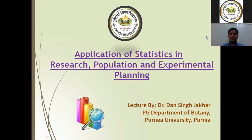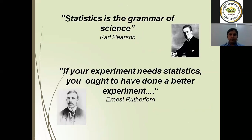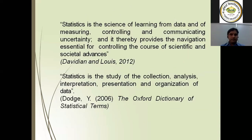Good afternoon. Today we will discuss the application of statistics in research, population, and experimental planning. Statistics is the grammar of science according to Carl Pearson. Another scientist, Ernest Rutherford, stated that if your experiment needs statistics, you ought to have designed a better experiment. Different scientists like Davidian and Lewis in 2012, and Dobje in 2006, as well as the Oxford Dictionary of Statistical Terms, have given different definitions.